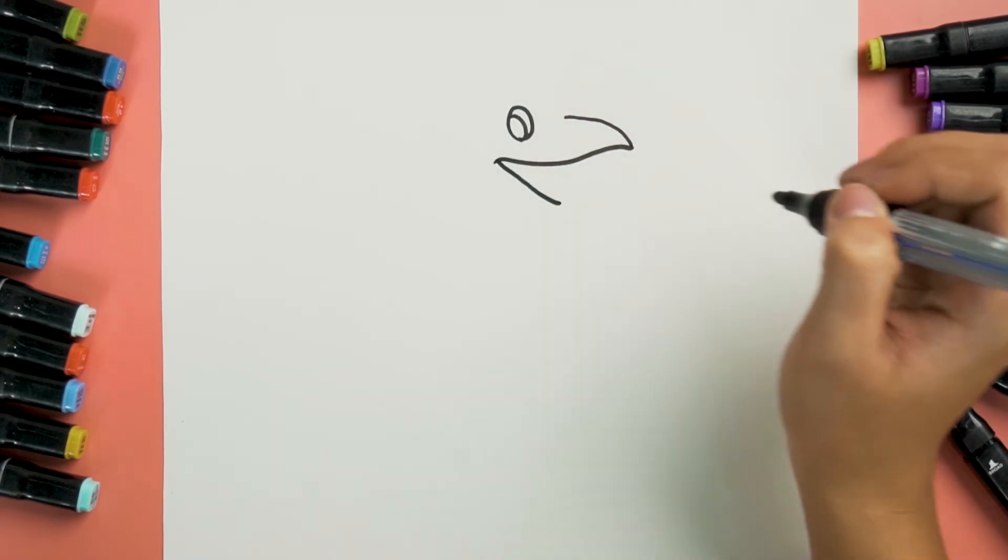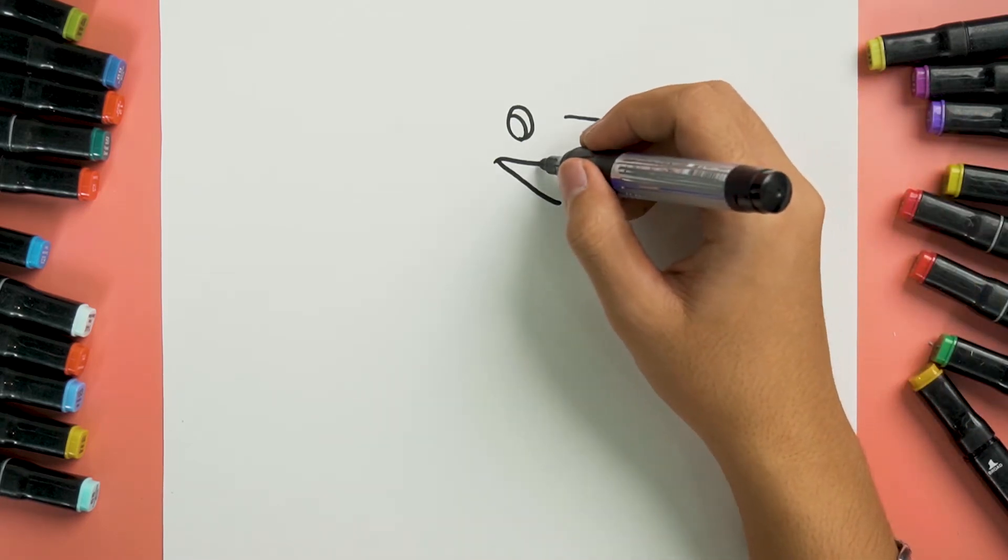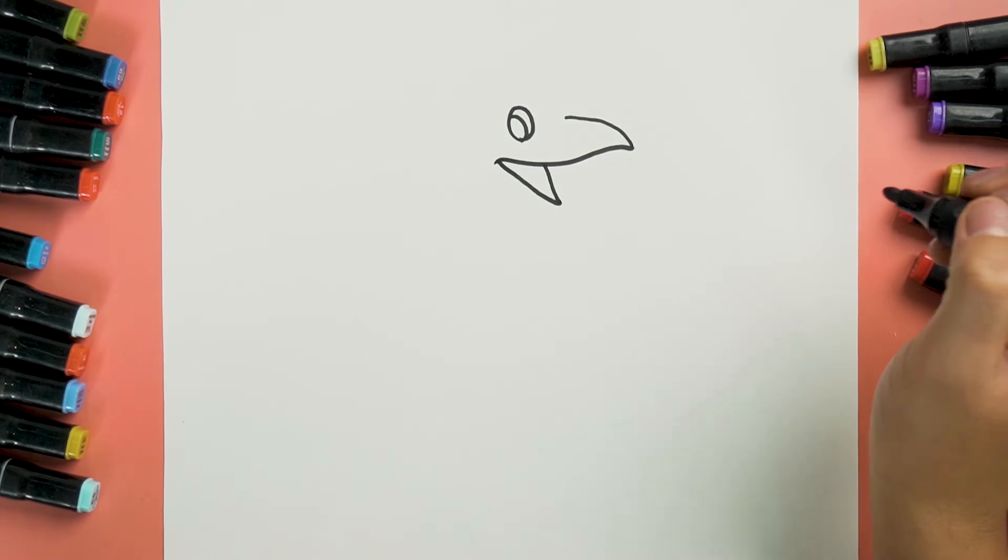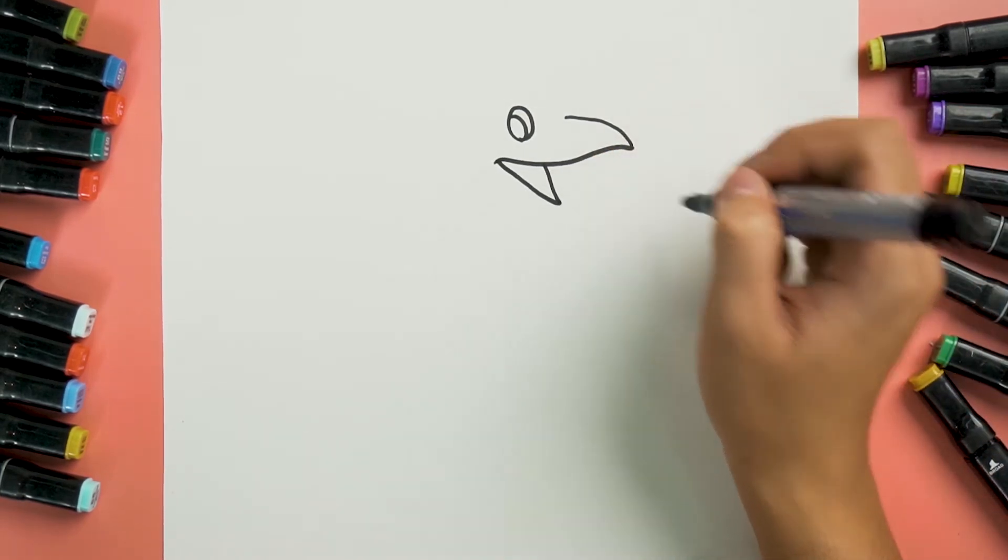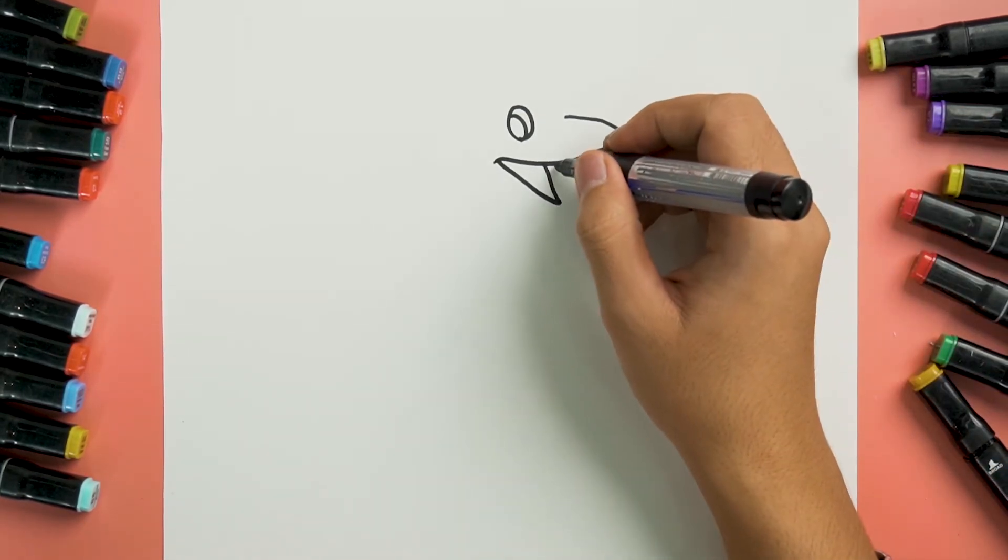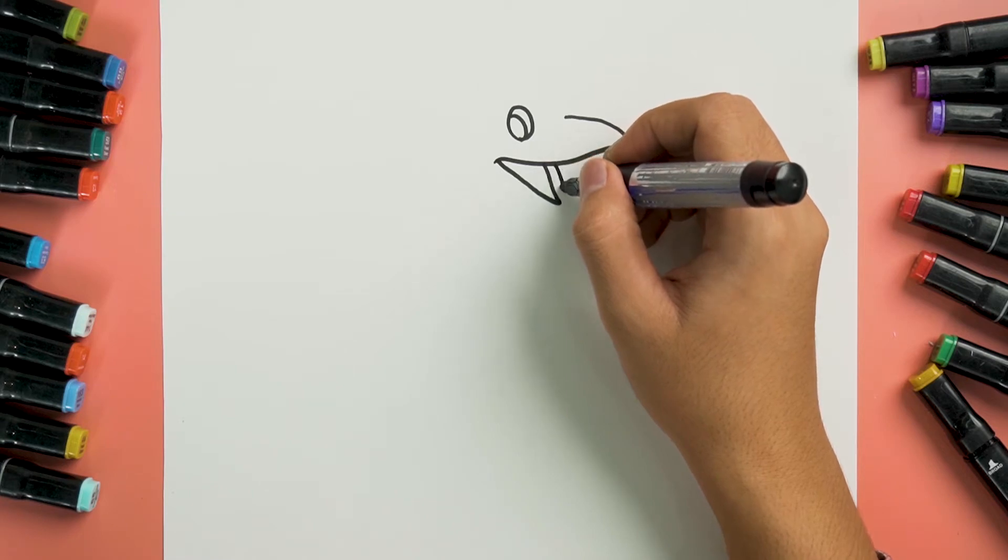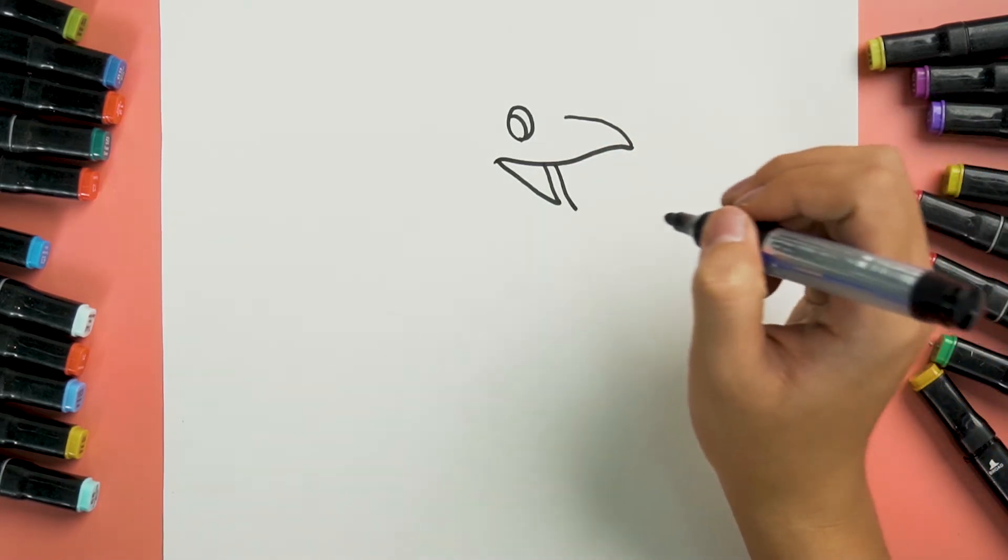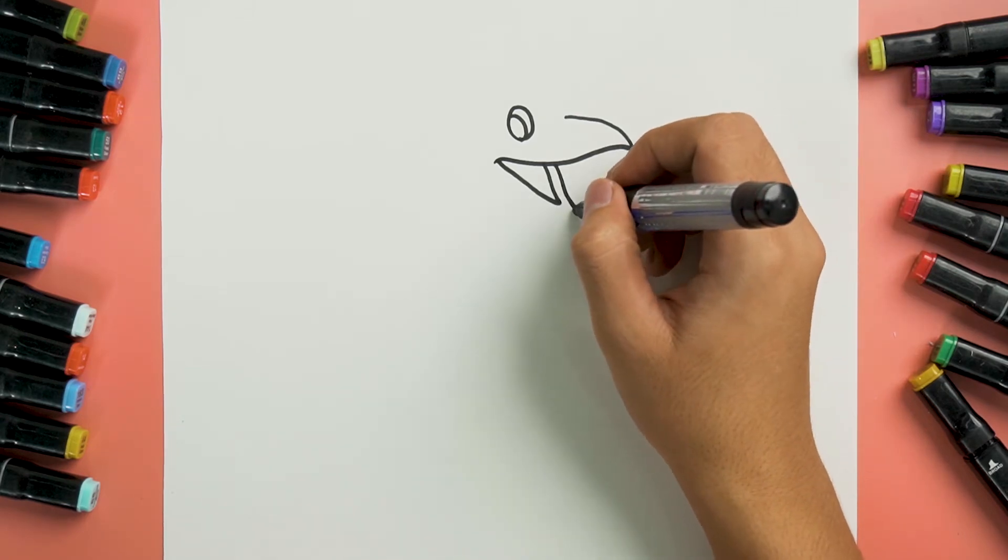Then we will draw another line downward and one more line for the mouth shape. We should draw two more lines around it so that our dolphin mouth will look more detailed and pretty.